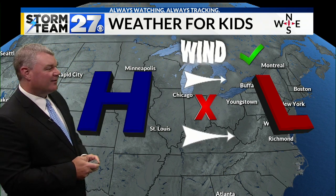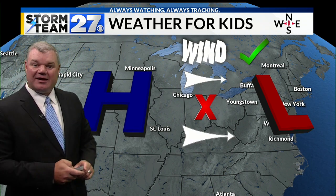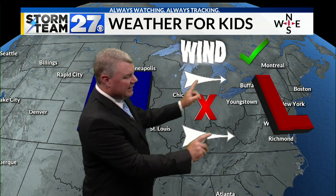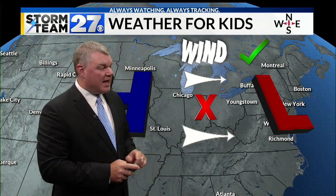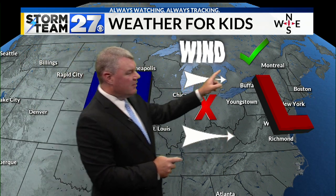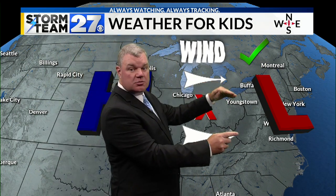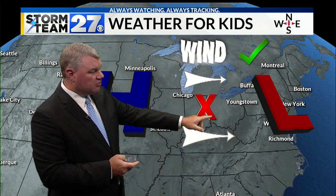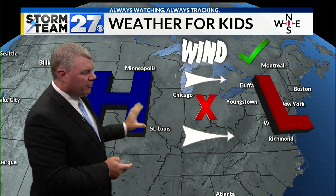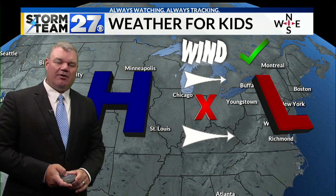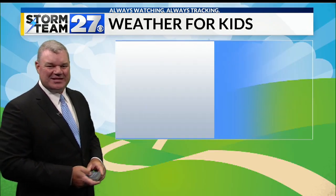Okay, here it is. That's right — if you said the air is going from the H heading toward the L, that means it is a west wind. So the wind is coming from the west toward the east. If you're at this X, you know that the wind would be blowing in this direction, across Indiana into Ohio.